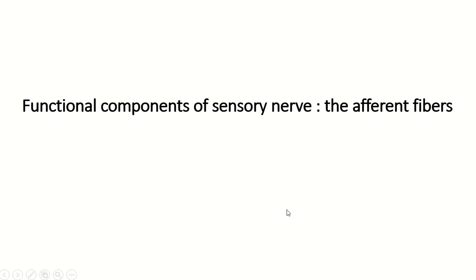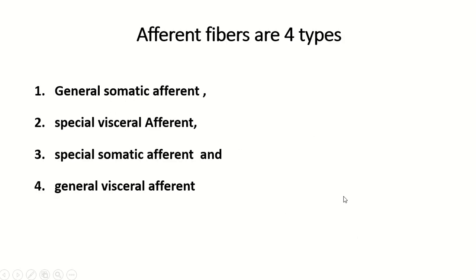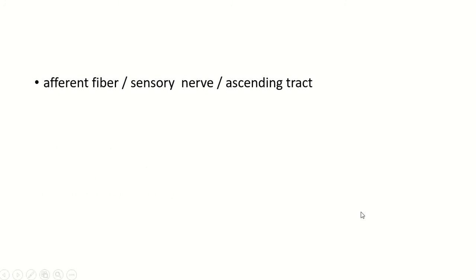Assalamu alaikum. In this video I discuss the functional component of the sensory nerve, the afferent fiber. Afferent fibers are four types: general somatic afferent, special visceral afferent, special somatic afferent, and general visceral afferent.